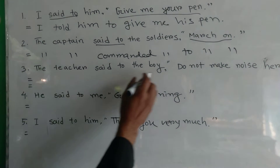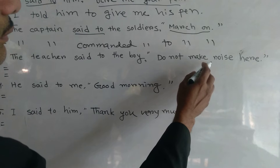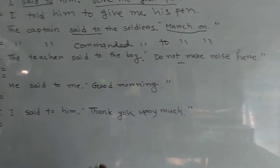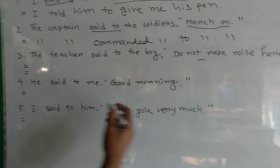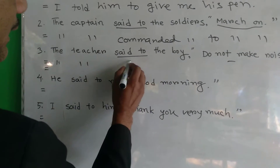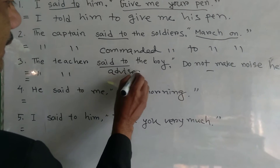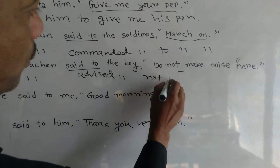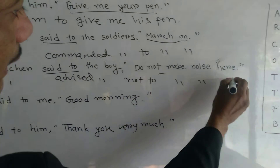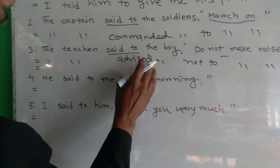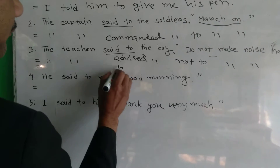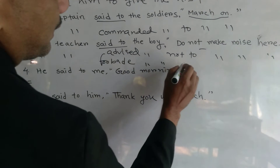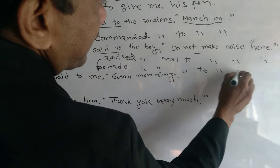Next: The teacher said to the boy, do not make a noise. This is a negative imperative. The teacher is forbidding, so you use 'forbade.' The sentence becomes: The teacher forbade the boy to make a noise.